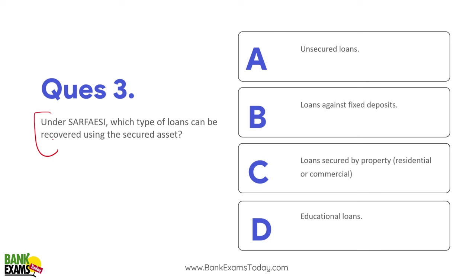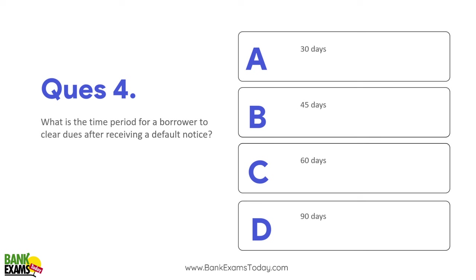Agricultural loans cannot be recovered — SARFAESI cannot be implemented on agricultural loans. Loans that are secured by property, either residential or commercial, can be recovered under SARFAESI. SARFAESI applies to loans secured by property, and that property should not be agricultural land.